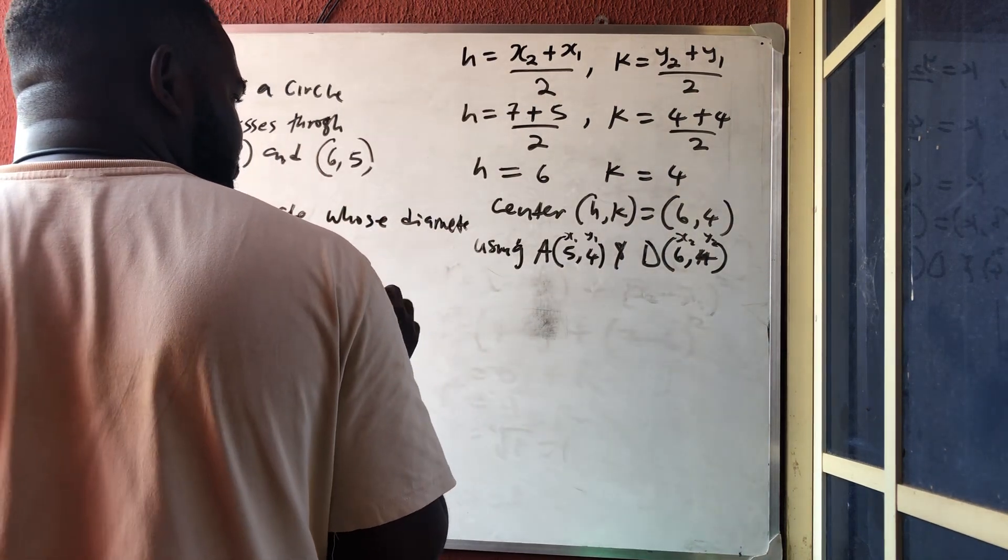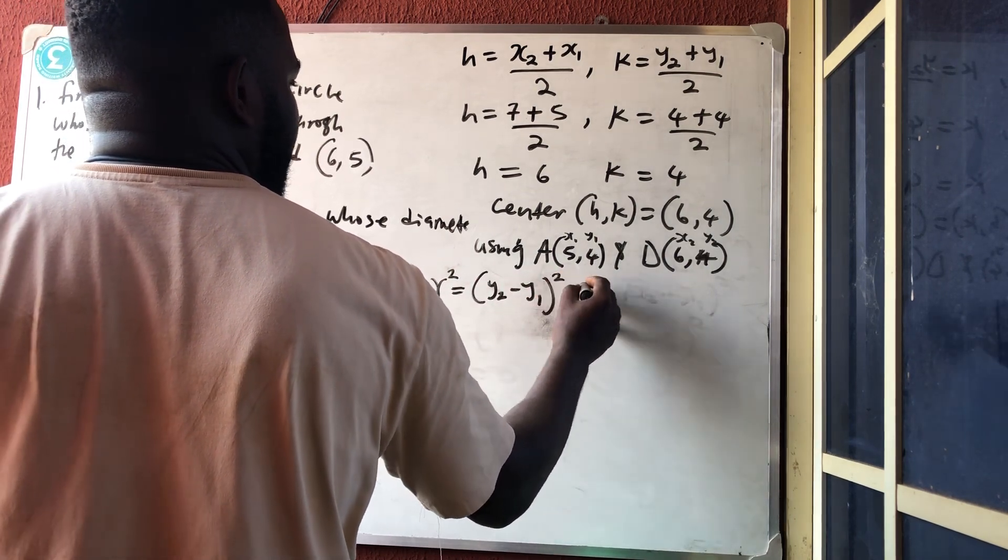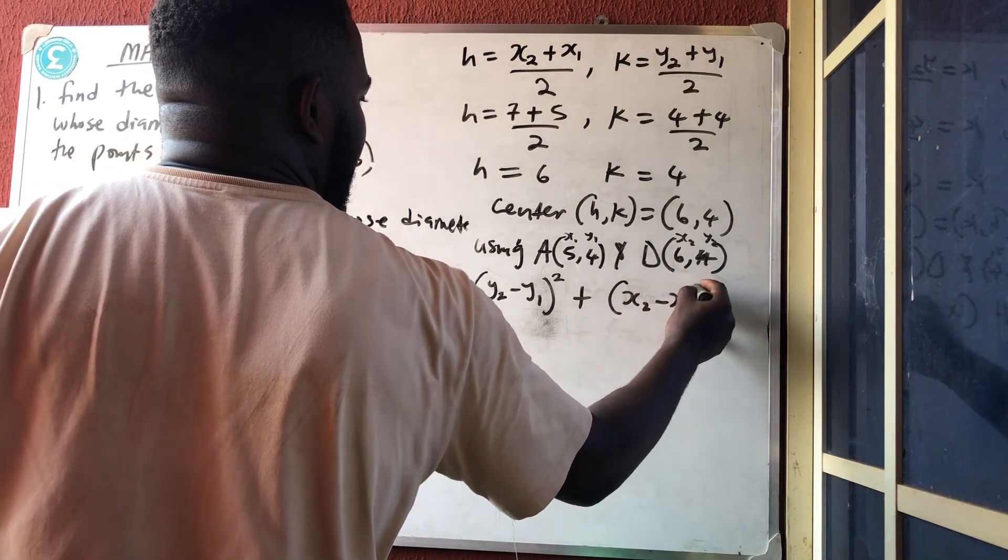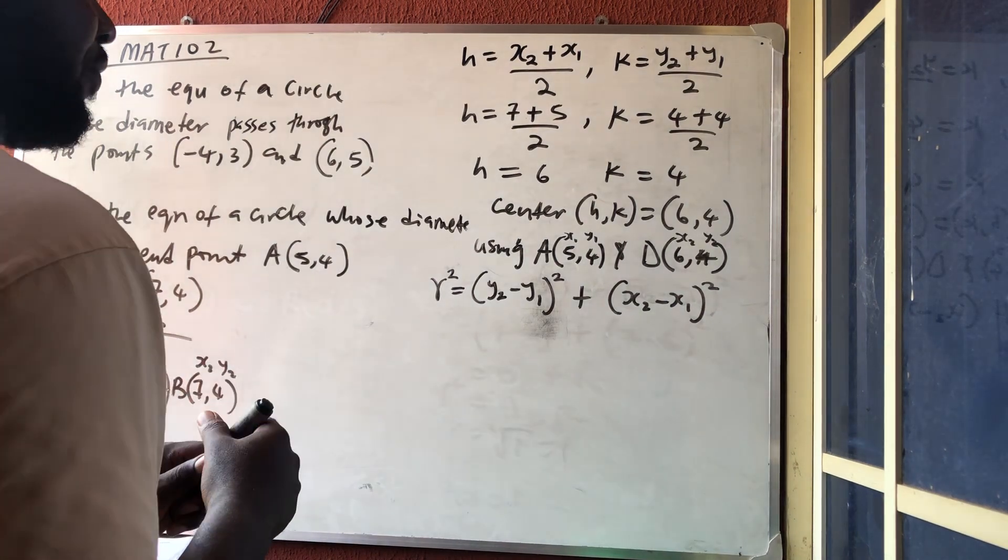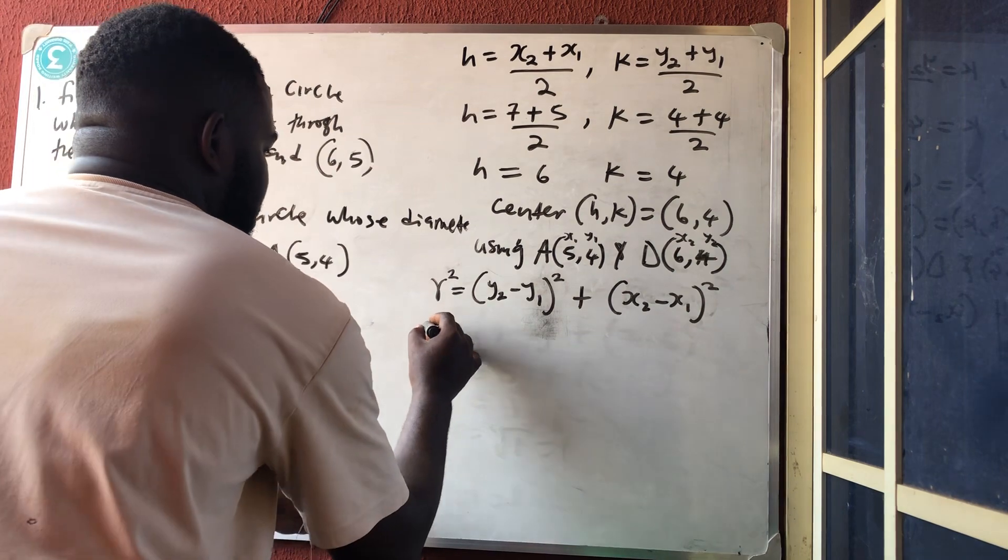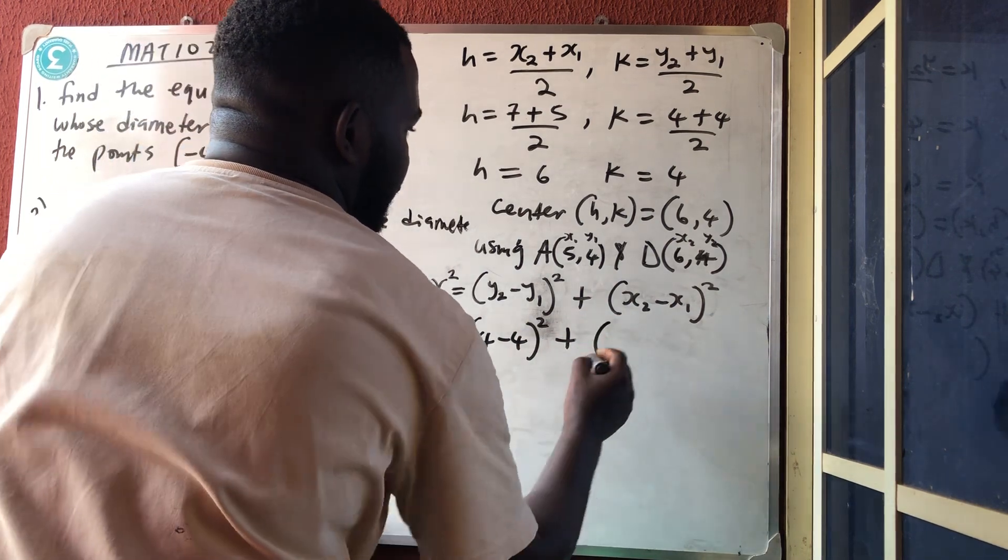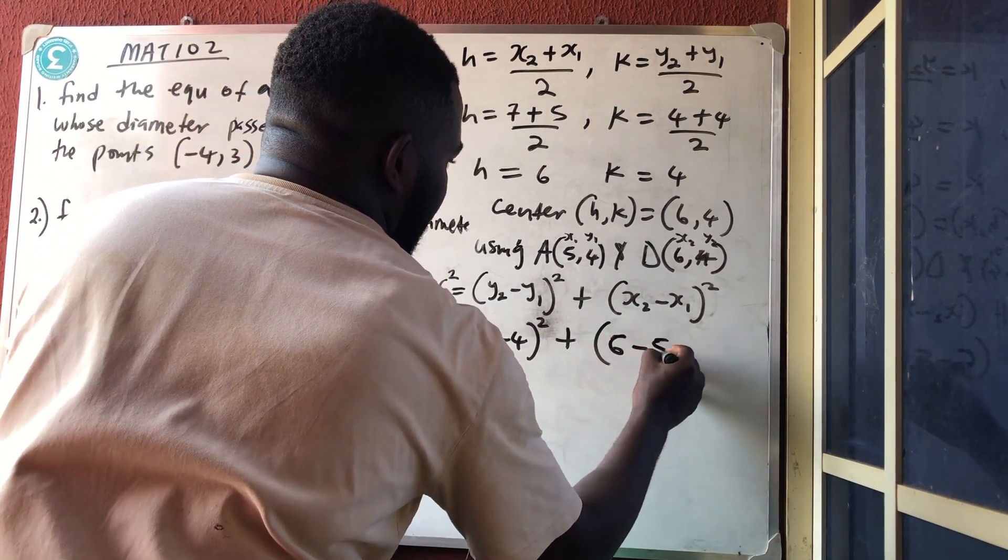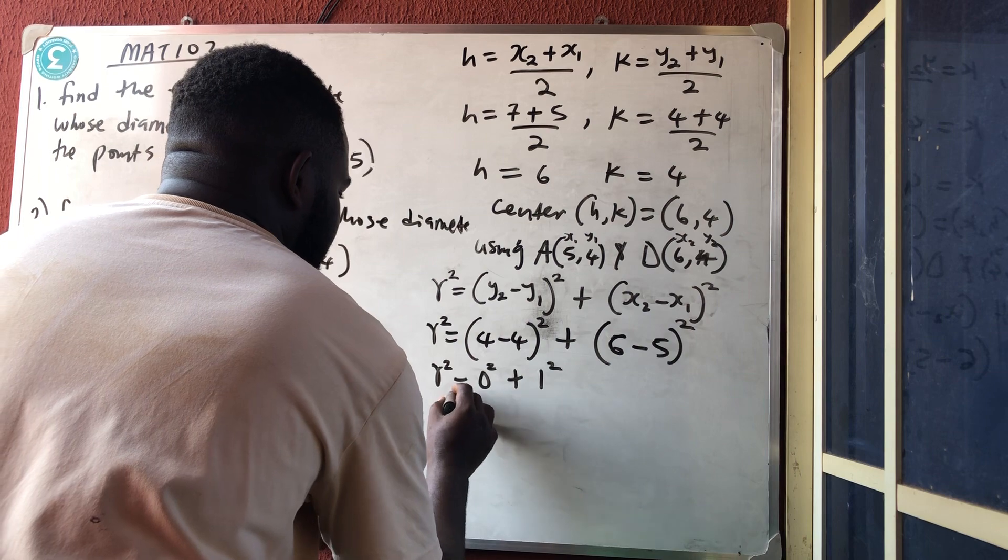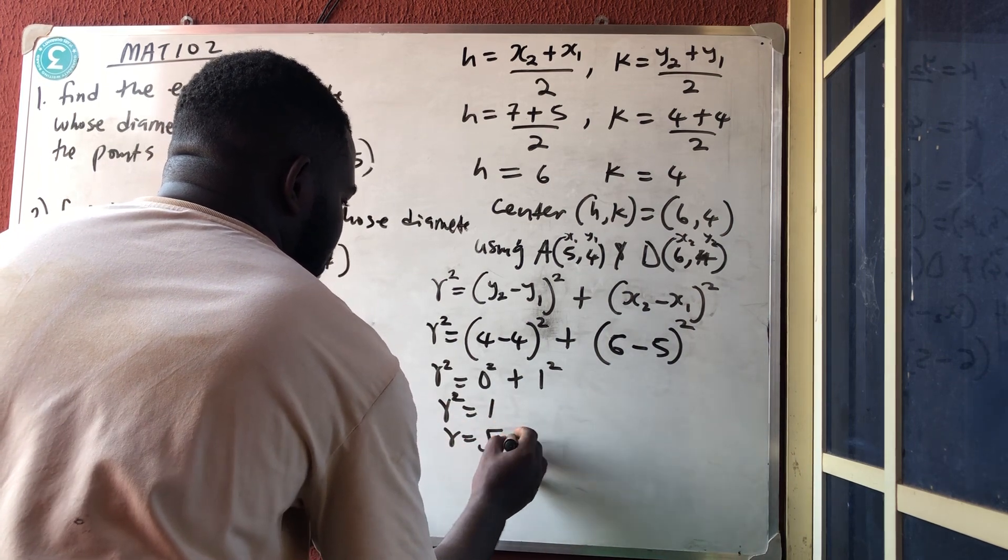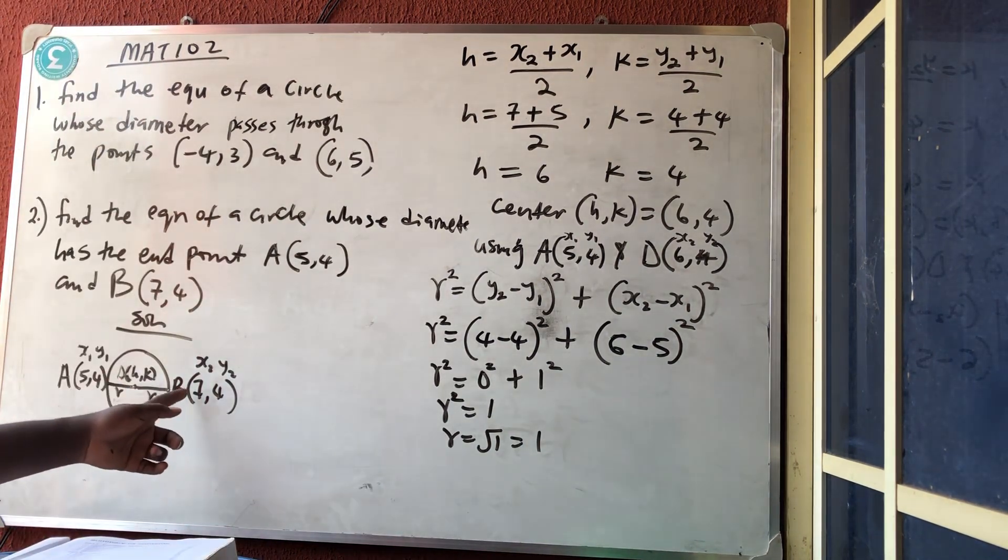To get the distance between two points, don't forget r² equals (y₂ - y₁)² plus (x₂ - x₁)². This is how to get the distance between two points. If you don't know it, go back to my video on straight line. So r² becomes (4 - 4)² plus (6 - 5)². r² equals 0² plus 1², so r² equals 1. Therefore r is the square root of 1 which is 1. If you try using D and B you must get the same answer.